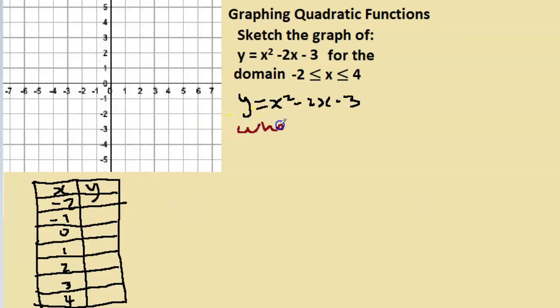When x = -2, y = x², but remember x is -2, so x² will be (-2)² which is positive 4, and then -2x will be -2 times -2, and then we have our -3. So 4 + 4 is 8, 8 - 3 is 5.